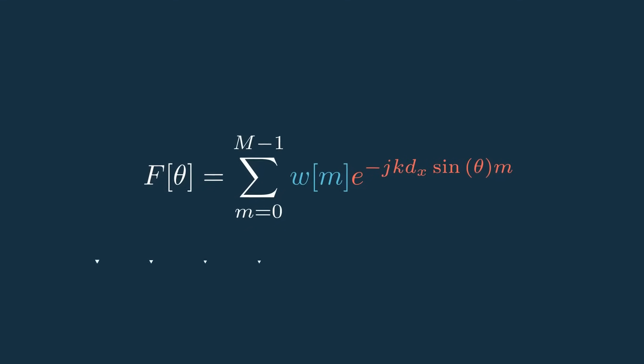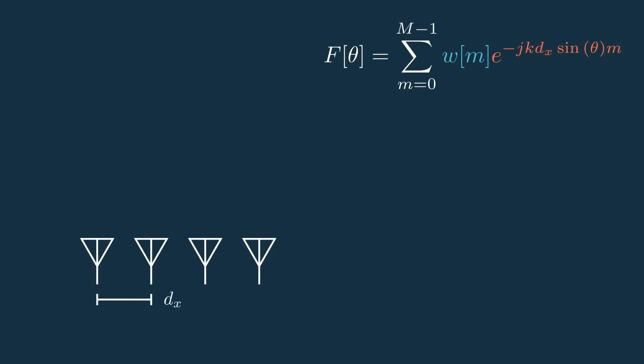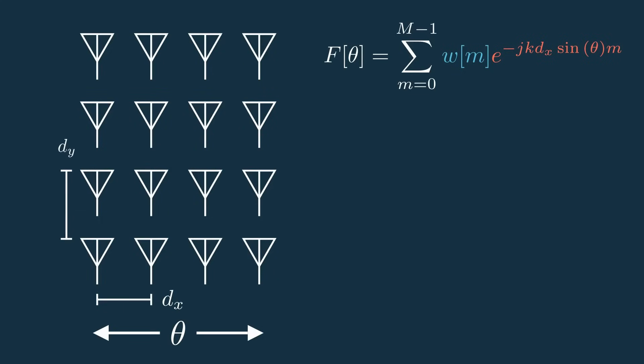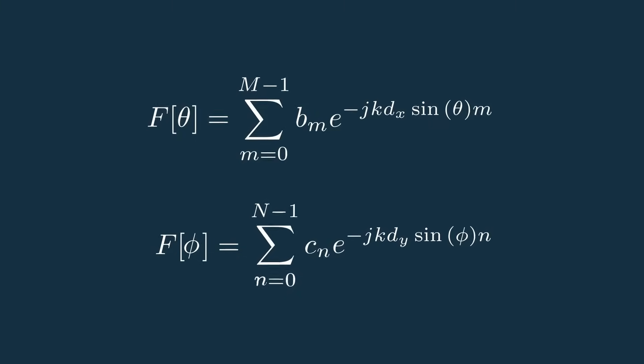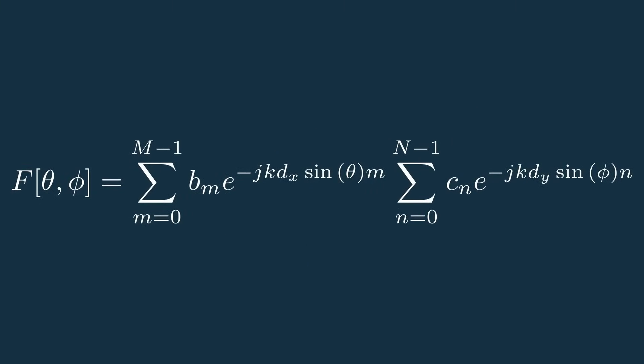But we already figured out the 1d array factor earlier in the video, so let's expand this to the second dimension as promised, because now that we have this fundamental equation, we can very easily expand it. So up to this point, we've been looking at a linear array of antennas spaced apart by dx, which allowed us to scan in theta. Now we can add antennas in the y dimension, spaced apart by dy, which would allow us to scan in a new direction, phi. Let's call the theta scanning indices, m, like we already have, and the new phi scanning indices, n. Let's also change our generic w weights to be b sub m and c sub n. Or you could also use a 2d weighting matrix, a sub m and n, which accounts for both. From here, we can just compute the array factor of these dimensions individually, then multiply the two, giving us a barely changed equation for the 2d array factor.